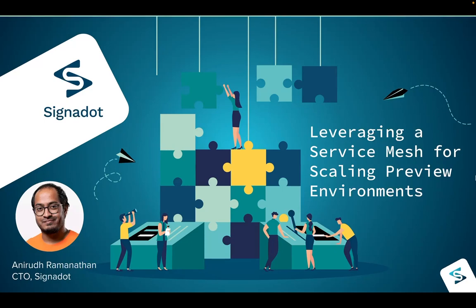Before we get into that, a little bit about my background. Prior to this, I spent a lot of time working on Kubernetes and ecosystem projects. I was one of the maintainers of the core workload controllers like StatefulSet, Deployment, and so on back in 2015-2016. I also spent time on the Apache Spark project and I'm a maintainer of the Kubernetes cluster backend in the Apache Spark project. In the past few years, I've been focused on developer productivity and how we can make microservice development very effective, especially at scale.